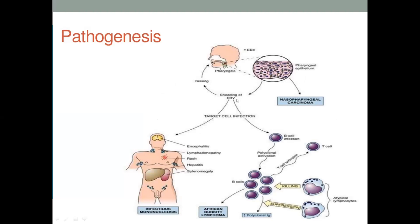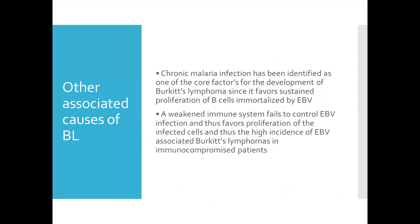Looking at the target organs affected: if it affects the blood, it leads to encephalitis; the lymph nodes, lymphadenitis; skin leads to a rash; liver, hepatitis. Other associated causes of Burkitt's lymphoma include chronic malaria infection, which has been identified as a core factor for its development since it favors sustained proliferation of B cells immortalized by EBV.